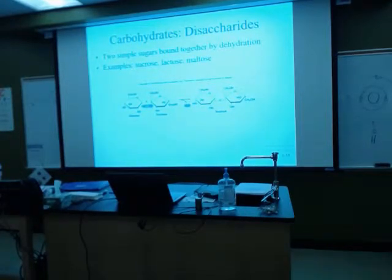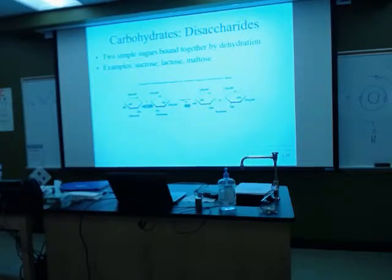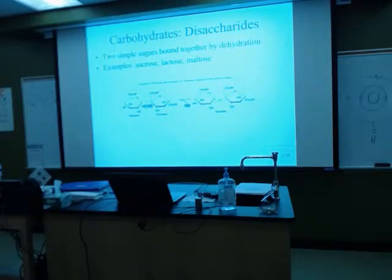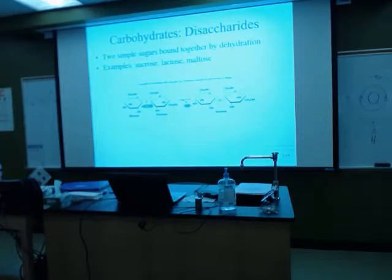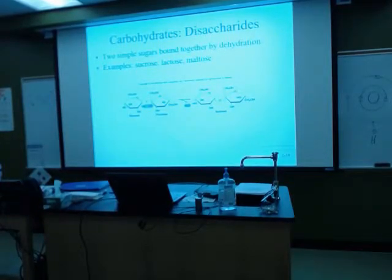Why am I trying to stress so heavily the glucose molecule? It's a simple sugar. Glucose, being in the simplest form, is going to be able to cross the plasma membrane, go into the cytoplasm, go through glycolysis, give me two pyruvates, enter into the mitochondria, and by the time it's over — 36 to 38 ATPs.